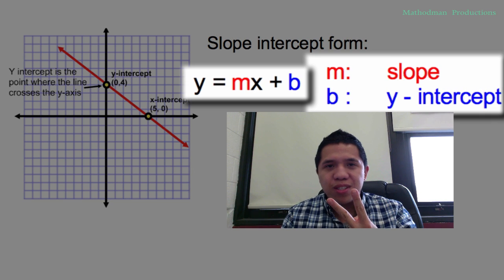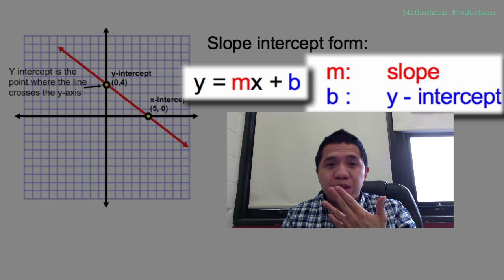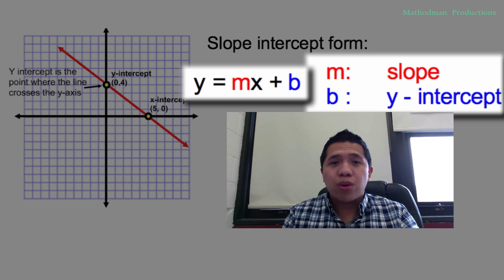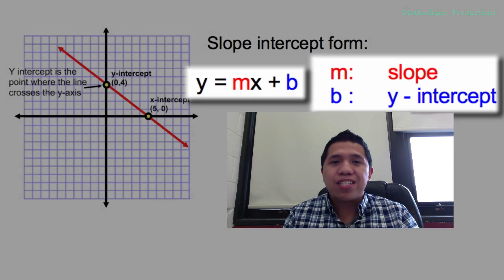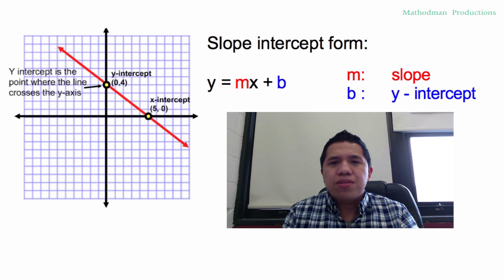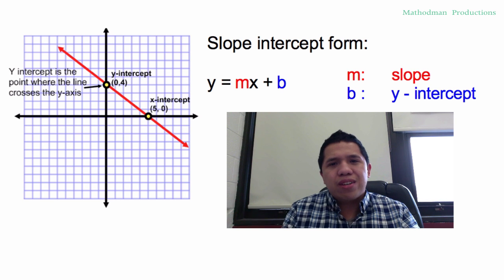Maybe that's why they call it slope-intercept form. In the equation, it's written in the format y equals mx plus b, where m stands for slope and b stands for the y-intercept. I don't know why they chose the letter b for y-intercept.